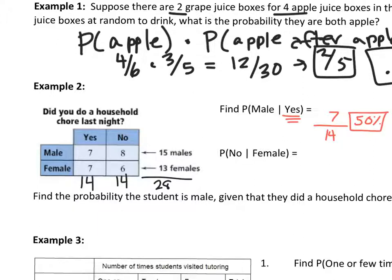For the second question, find the probability they did not do a household chore given they were female. Find the total number of females, which is 13. Of these 13, how many said no? Six. So it's six out of 13, which you can write as a fraction or calculate on your calculator to get about 46%.